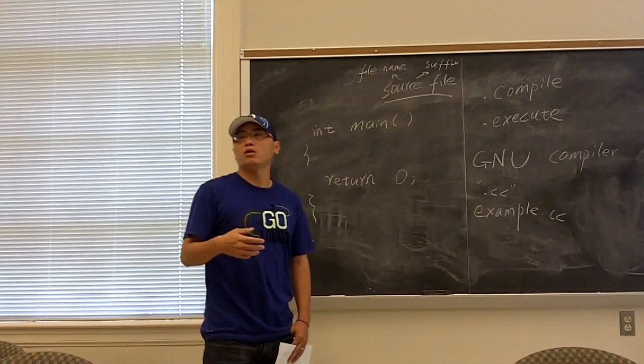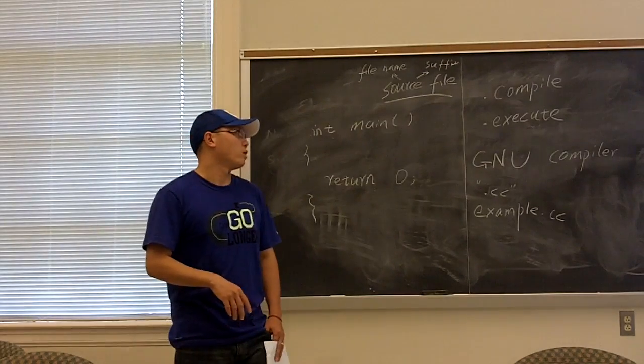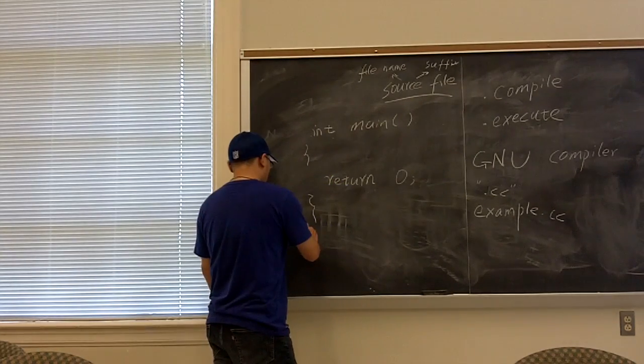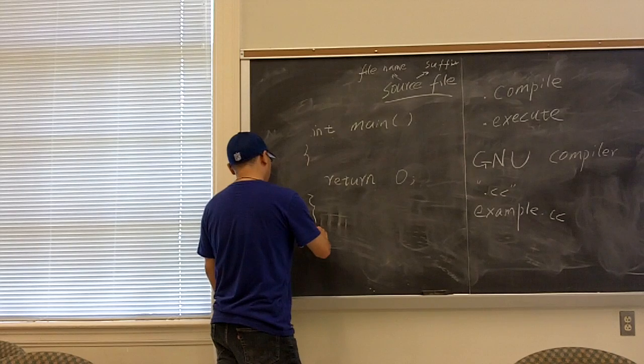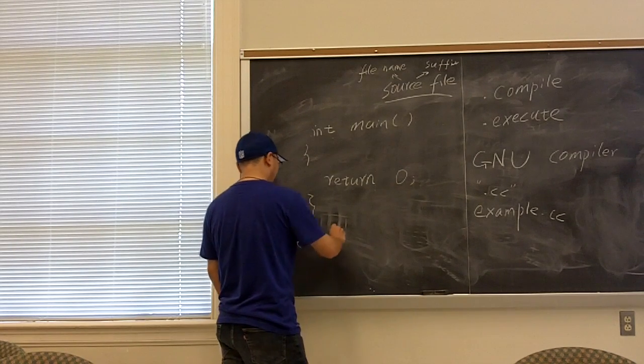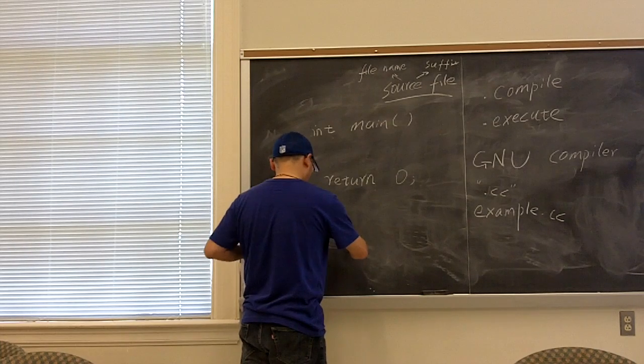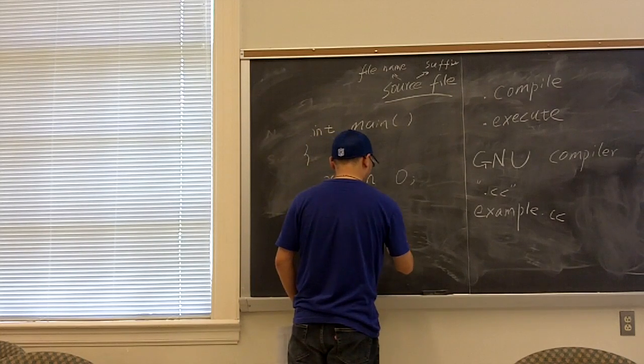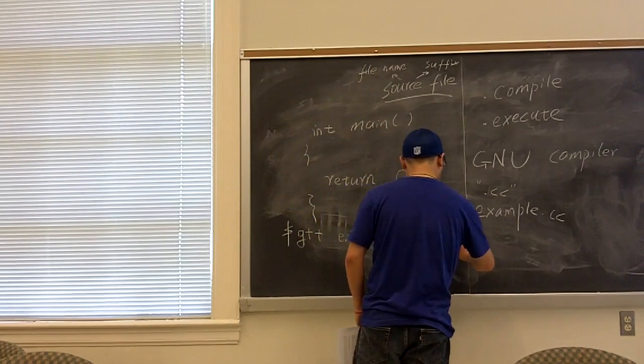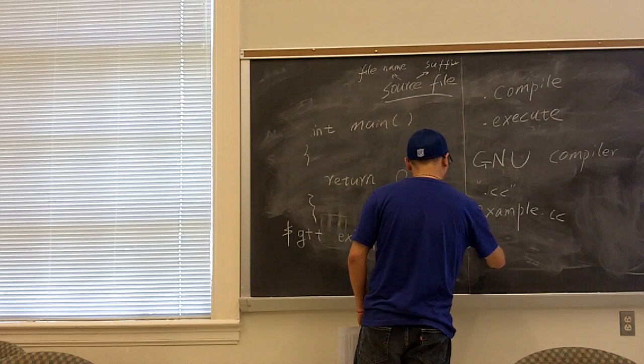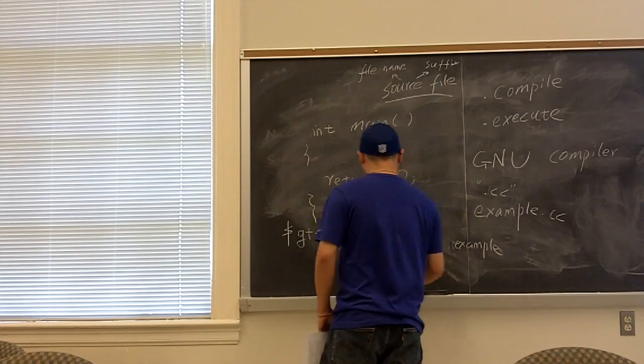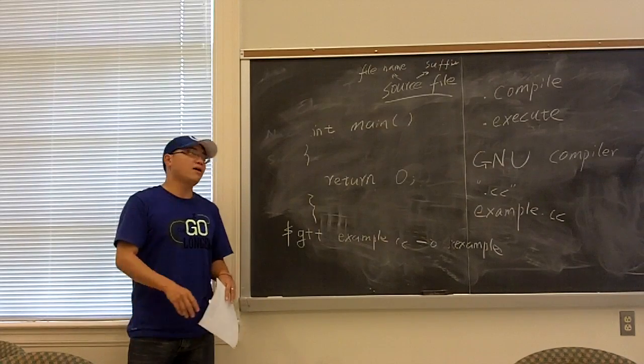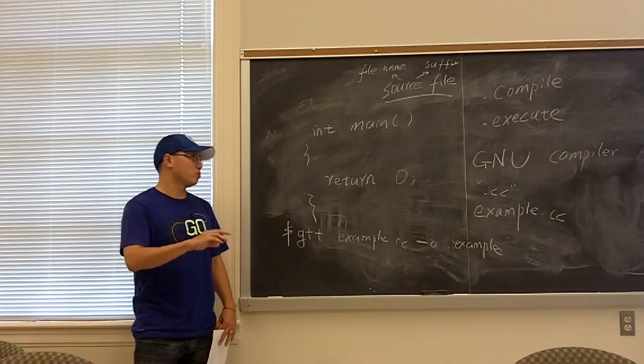Okay, after we save our code into a source file, we can compile this file. The commands to compile the program is like this. Like this. The dollar sign is the system prompt. And this command generates an executable file called example.